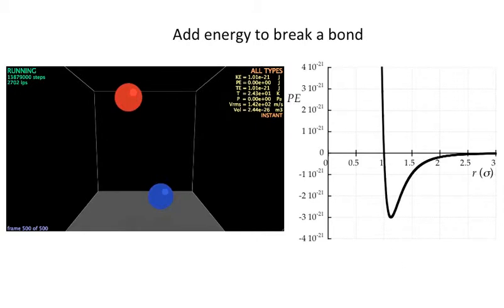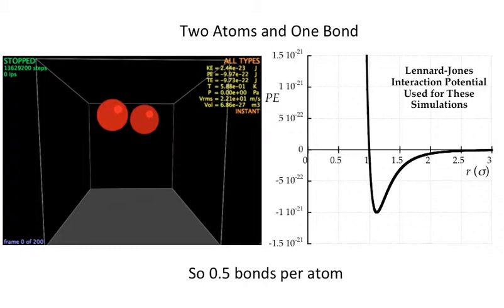We're going to use that idea. The idea is the well depth tells us how much energy we have to add to break a bond. We're going to use that to think about bond energy for more atoms. First we'll go back to 2.